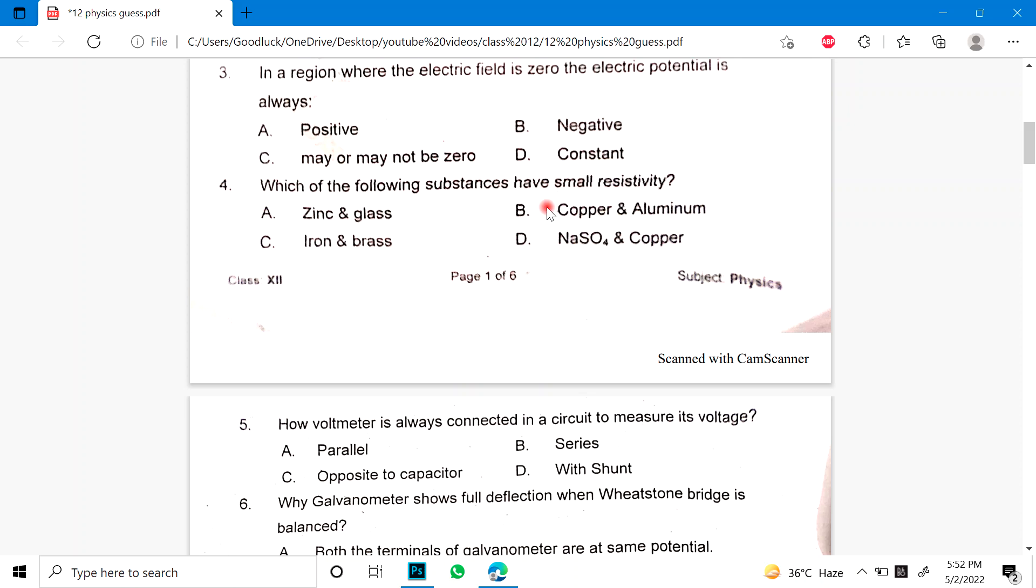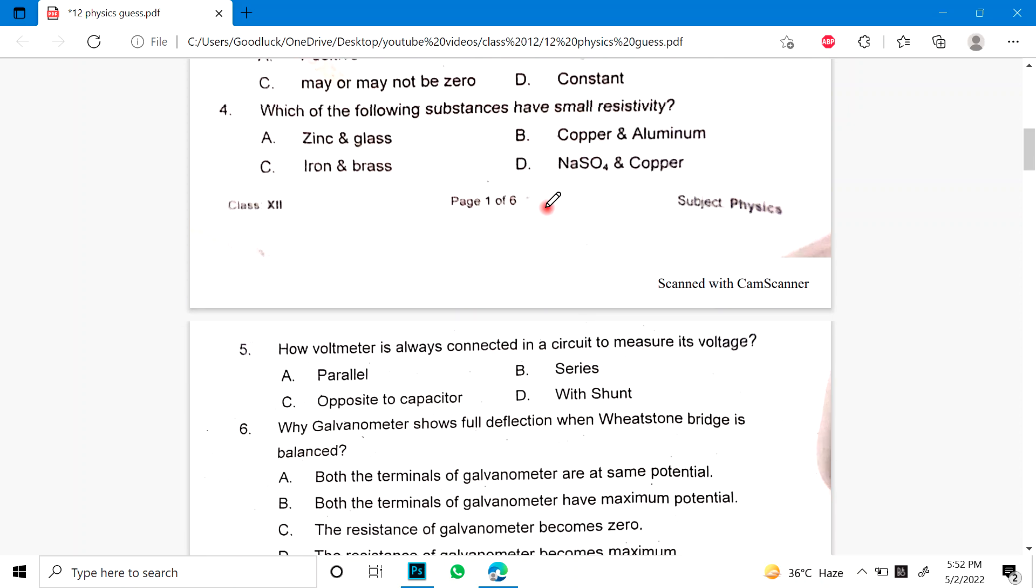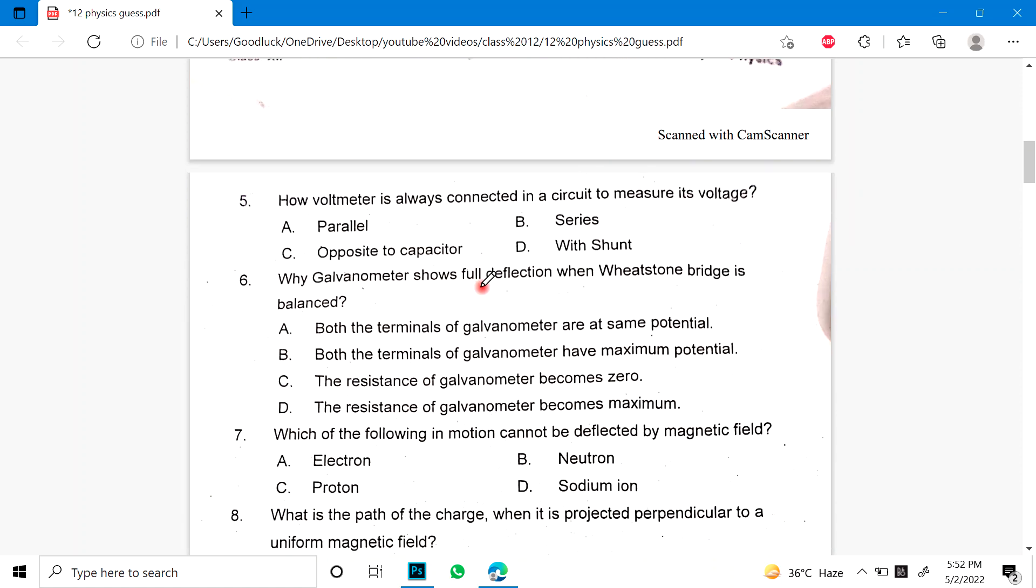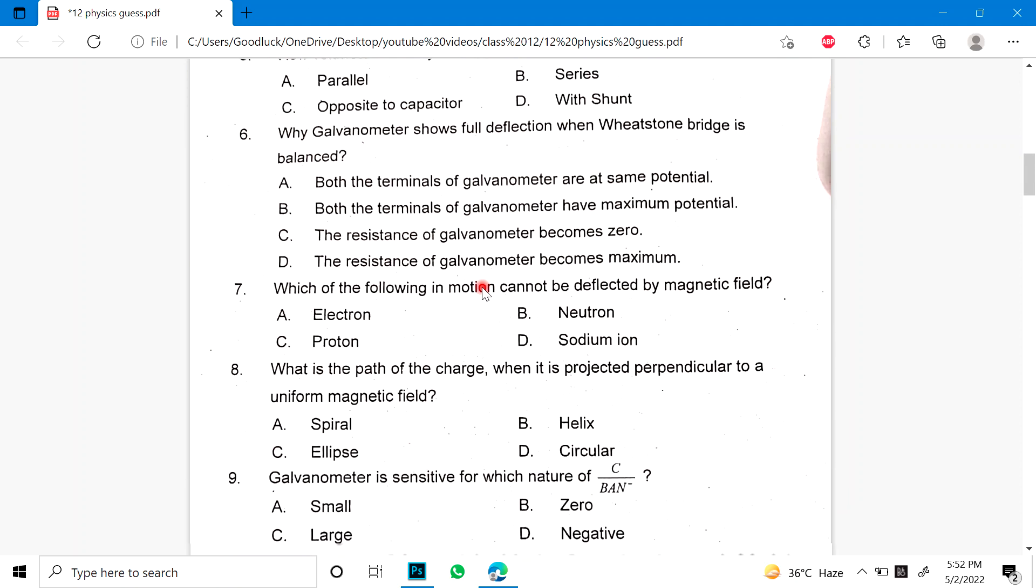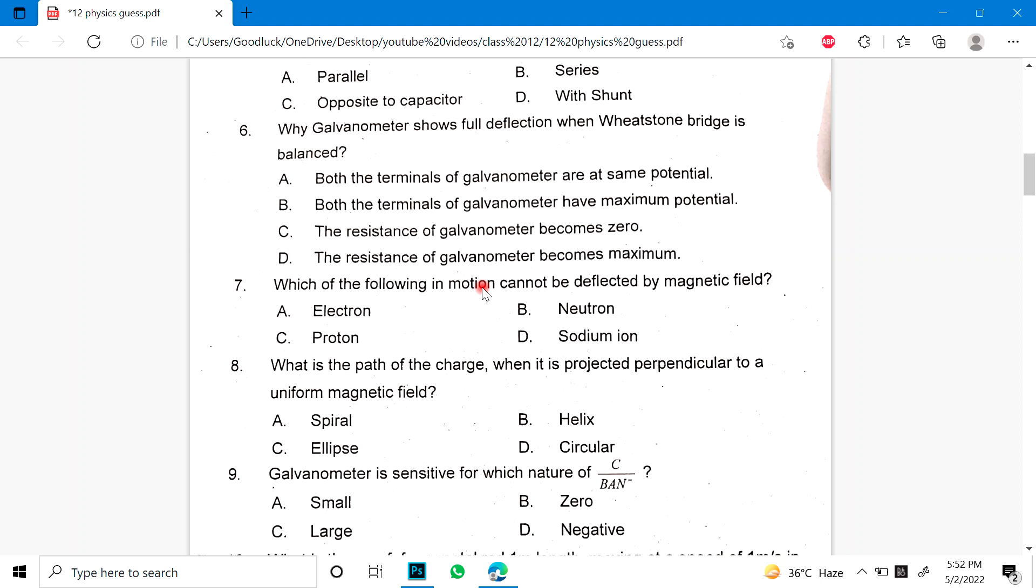Number 4 is: Which of the following substances have a small resistivity? Or you have to research properly and check the answer. Number 5: How voltmeter is always connected in a circuit to measure its voltage? Number 6: Why galvanometer shows full deflection when Wheatstone bridge is balanced.